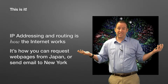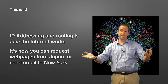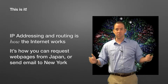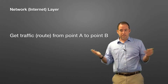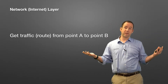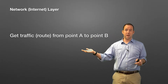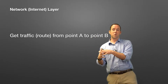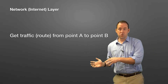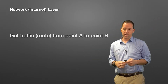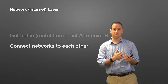And that's it — that's the network layer's job. It makes the network work. The network layer routes traffic from point A to point B. Routing is the term for getting traffic from point A to point B — it's choosing a path to get stuff where it needs to go, and it connects various networks to each other.